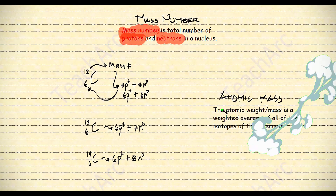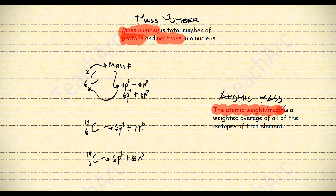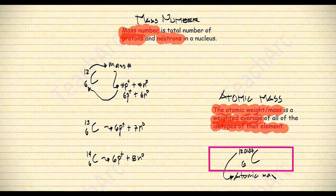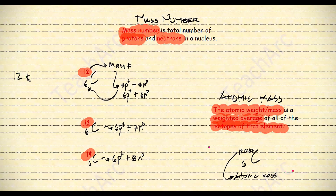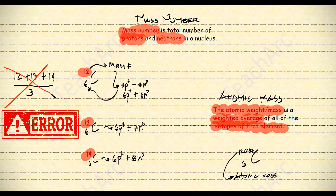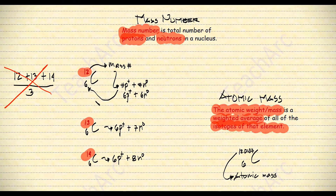Atomic mass, on the other hand, is the weighted average of all the isotopes of an element — just like carbon, this is the atomic mass of carbon. You might think computing atomic mass is easy by just adding 12 plus 13 plus 14 divided by 3. Unfortunately, that is wrong, because these isotopes have different abundances.